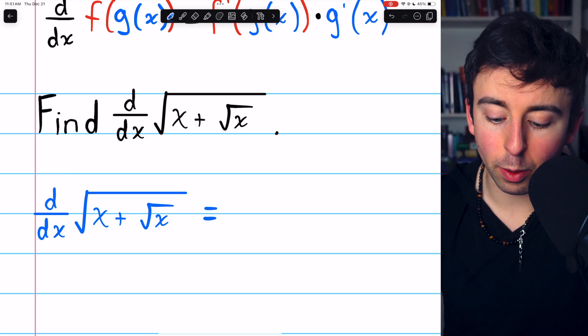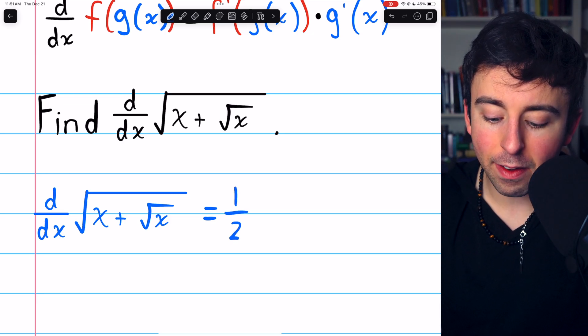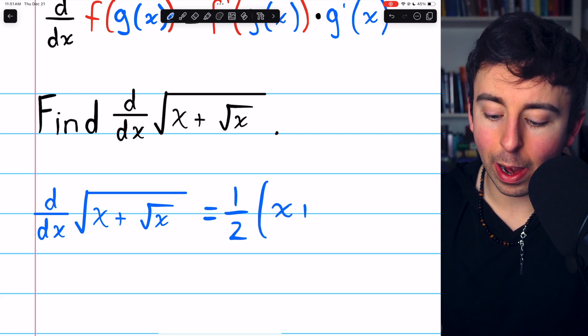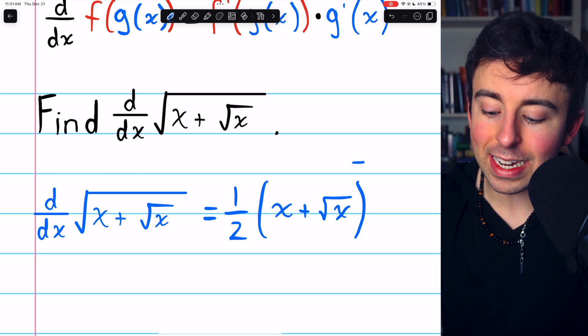The derivative of a square root is one half multiplied by the thing in the square root, which in our case is x plus root x, to the negative half.